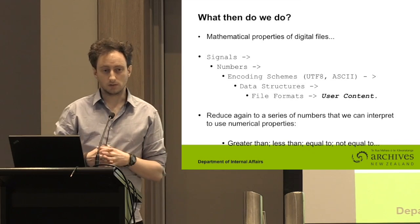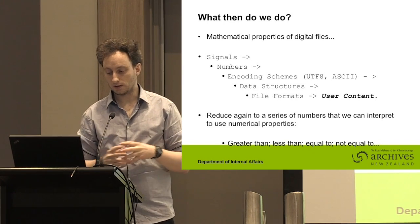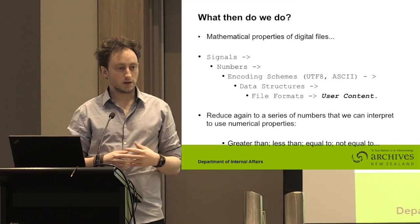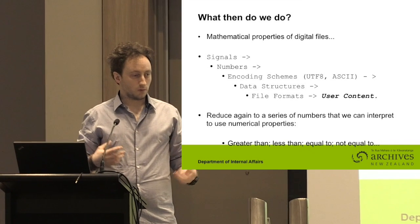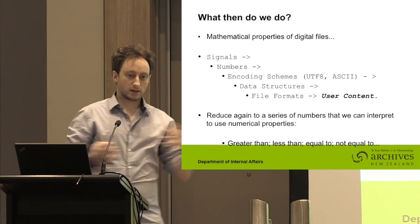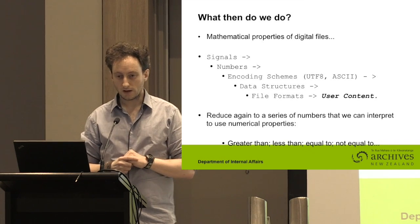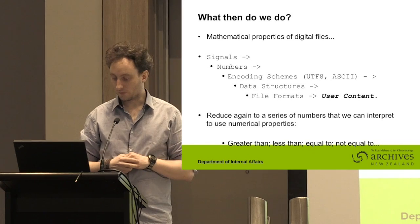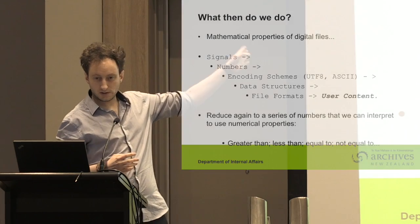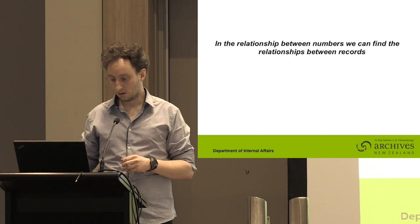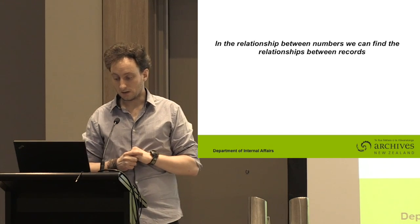So what can we do? Digital records have mathematical relationships between each of them. Digital records are built upon signals, which are built upon numbers and encoding schemes, which turn themselves into data structures, and of course become file formats — and inside the file formats we have user content. But if you go back, all we have is a series of numbers, and we can use the properties of numbers to start thinking about relationships between records. We can say a record is equal to, greater than, or less than another. A string is just a word or set of words in computer form — just big numbers we can compare. Therefore, a record is a big number we can compare.